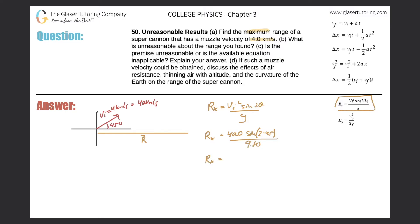So easy enough — just take out the calculator and plug it all in. Don't forget the squared sign; that whole thing is squared. So we get 4,000 squared divided by 9.8 essentially. This is a very large number. We get 1.63 times 10 to the 6.